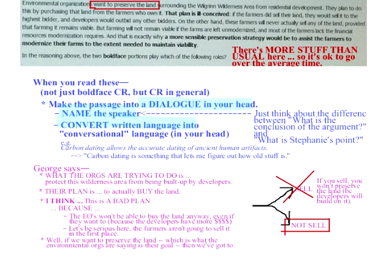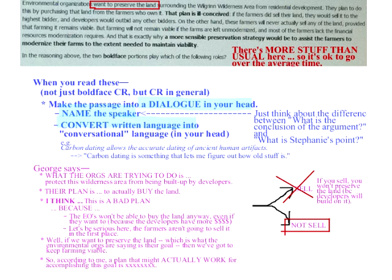So George's plan — at least the plan he thinks would work — is the last thing in the last line. According to George, a plan that might actually work for accomplishing this goal is to keep farming viable. This is what should happen in your head as you read this passage.